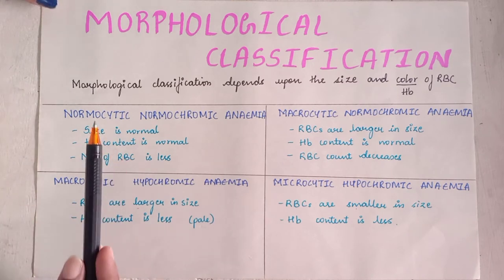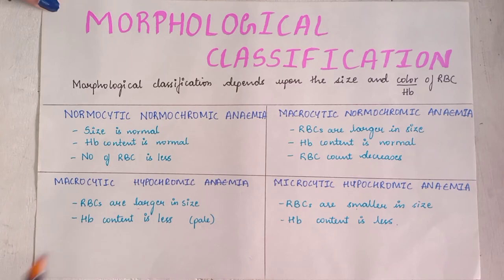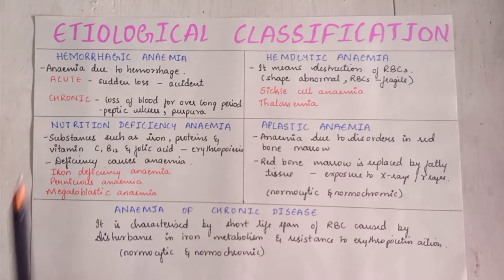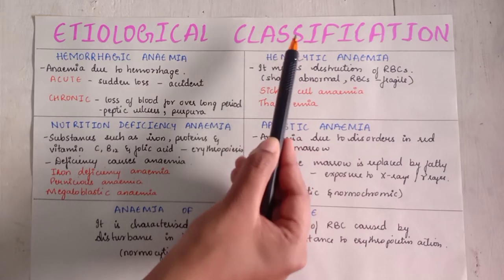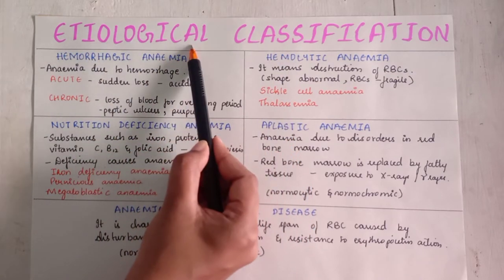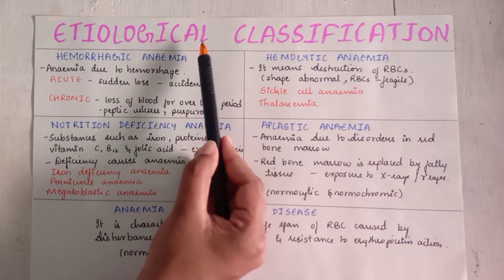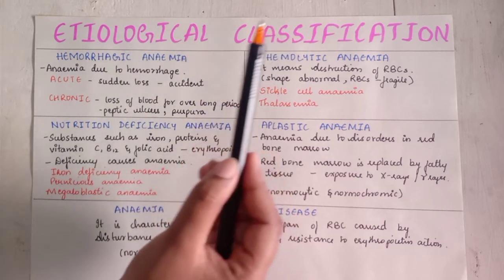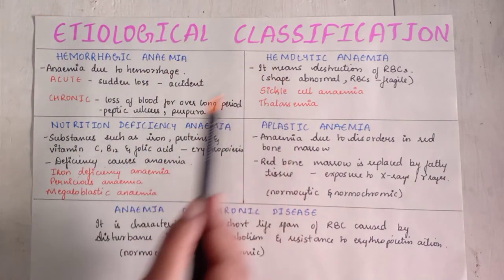So these are the four types in the morphological classification. Next, we come to the etiological classification. Here etiology means cause, so based on the cause, it is divided into five types.